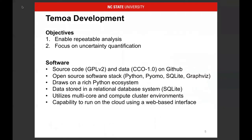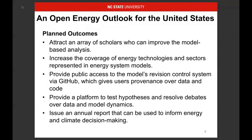We wanted to make both the source code and the data open so folks could replicate results we publish, and we also wanted to focus on uncertainty quantification. The model source code and data are publicly available on GitHub. We use an open source software stack — the main exception is we often use commercial solvers like CPLEX for optimization. It's Python-based, drawing on a rich Python ecosystem. We store data in a relational database using SQLite, and we also have the capability to run the model on the cloud using a web-based interface.